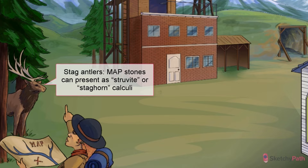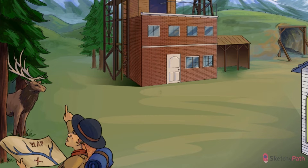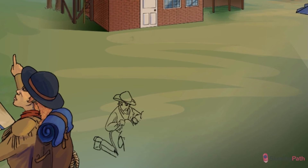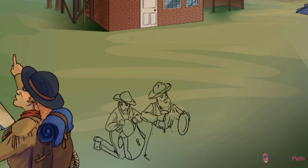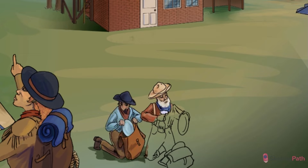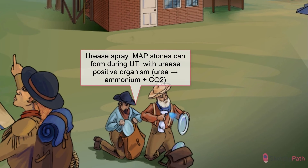These stones form almost always in the presence of an upper urinary tract infection with a urease-positive organism. At Sketchy, urease — the enzyme that splits urea into ammonium and carbon dioxide — is always represented by a spray bottle of ammonium cleaner, this time being used to prep the panning equipment before setting off to the mother lode. Ammonium is the A in M-A-P.